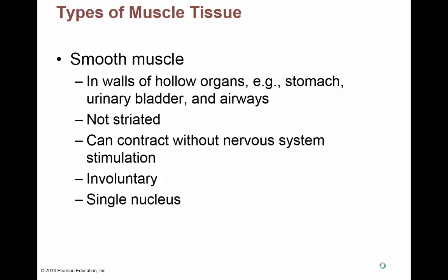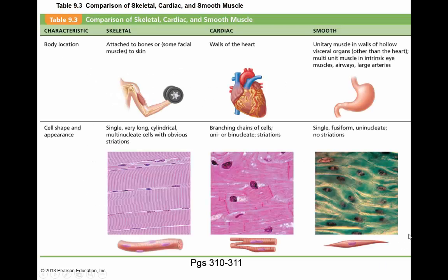Smooth muscle is involuntary — we have no control over it. It does its own thing, moving fluids or substances through it. It has just one single nucleus, similar to cardiac muscle. The term fusiform refers to the cell shape — elongated, kind of football-shaped and very skinny. It won't be asked on the exam.